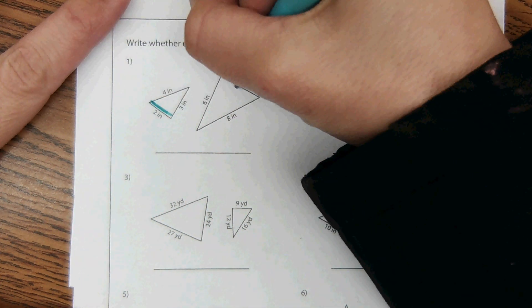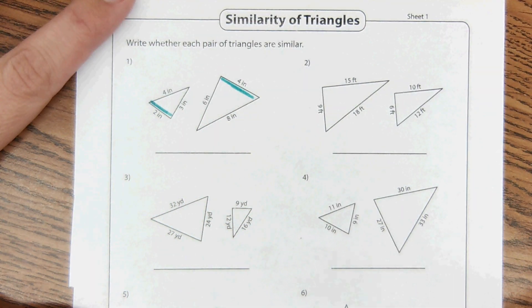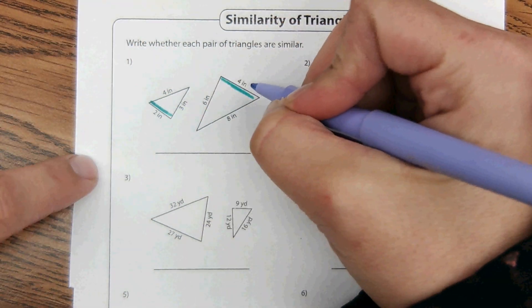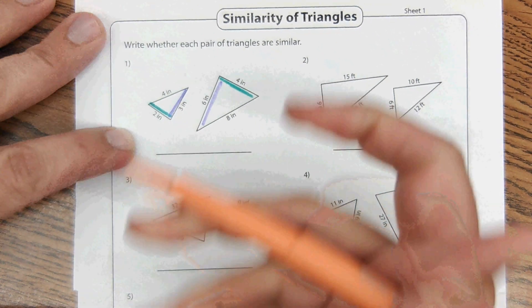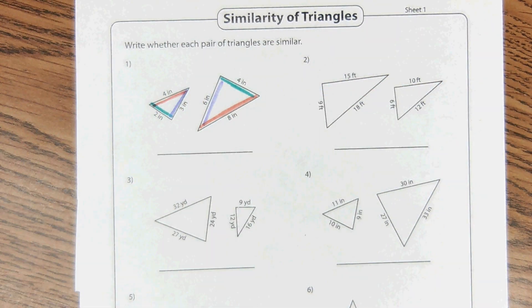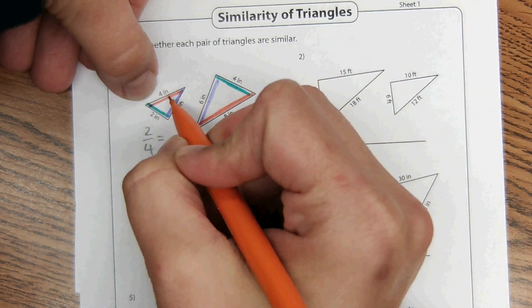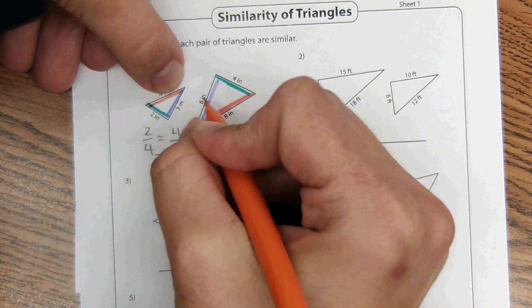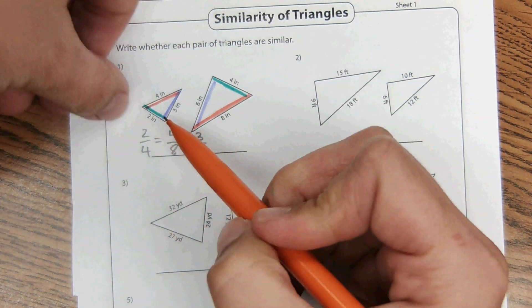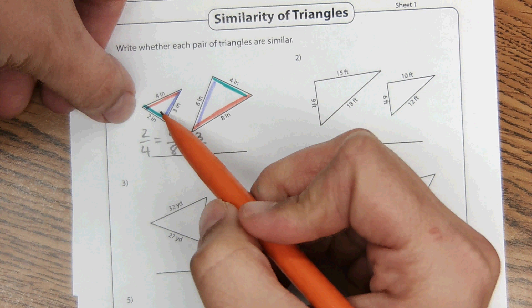So we're going to identify corresponding parts. So this shortest side corresponds with this side right here. Sometimes it can be hard to tell, but the shortest side will always correspond with the shortest. Like medium side will always correspond with medium. And then the longest side will always correspond with the longest side. So there's your corresponding parts.